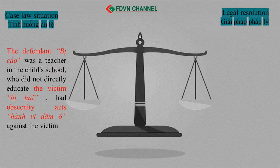In this case, the court must determine the crime of obscenity against children according to Point C, Clause 2, Article 116 of the Penal Code 1999, with the punishment bracket circumstance of against a child whom the offender has the responsibility to educate, corresponding with Point 2, Article 146 of the Penal Code 2015, on the crime of obscenity against persons under 16 years old with the punishment bracket circumstance of against persons whom the offender has responsibility to educate.